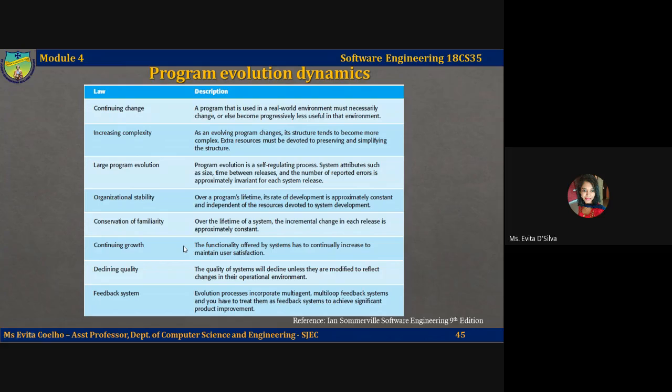The third law states: large program evolution is a self-regulating process. System attributes such as size, time between releases, and the number of reported errors is approximately invariant for each system release. The third law suggests that large systems have a dynamic of their own that is established at an early stage in the development process.